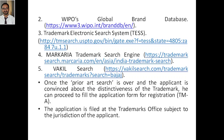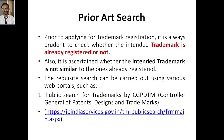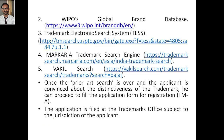Next, we have WIPO — World Intellectual Property Organization's Global Brand Database at www3.wipo.int/branddb. Next, we have TESS — Trademark Electronic Search System. Next, Markaria — a Trademark Search Engine. Finally, we have Vakil Search. So the databases are CGPDTM, WIPO, TESS, Markaria, and Vakil.